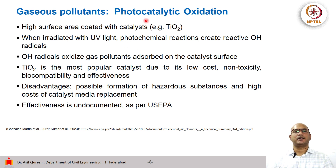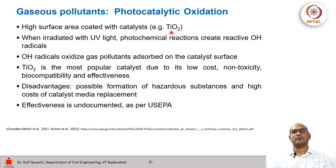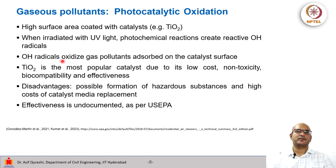Then we have photocatalytic oxidation, where the apparatus has a high surface area coated with a catalyst — for example TiO2 — so that when this catalyst-coated area is irradiated with UV light, photochemical reactions occur, resulting in the creation of reactive hydroxyl (OH) radicals. These OH radicals will then oxidize the gaseous pollutants that are adsorbed on the catalyst surface.